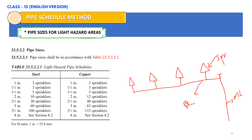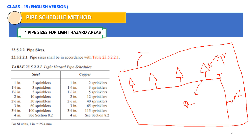Now, once we have the routing of the pipe and the distribution of the sprinklers based on NFPA 13, we can define the pipe sizes according to the pipe schedule method. For example, if the area we consider is an office, then it will come under light hazard occupancy. In light hazard occupancy, we need to start from the end. As you can see, for two sprinklers we can use one-inch pipe. So this will be one sprinkler — one-inch pipe can be used — and for the second sprinkler also, as per the pipe schedule for light hazard, we can go ahead with one-inch pipe.